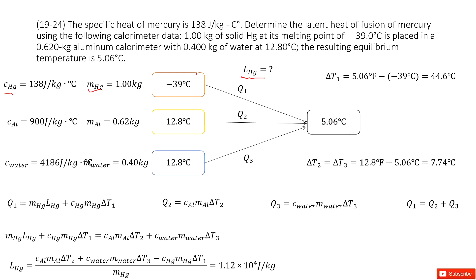So this is called Q₁. And then in this system, we have another material called aluminum. The mass is given, and also the specific heat is given. And this aluminum also changes temperature from 12.8 degrees centigrade to the final temperature.